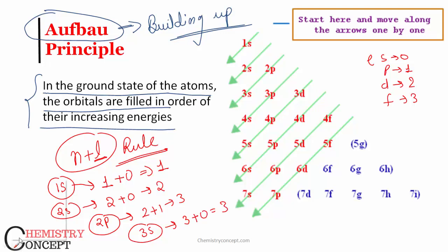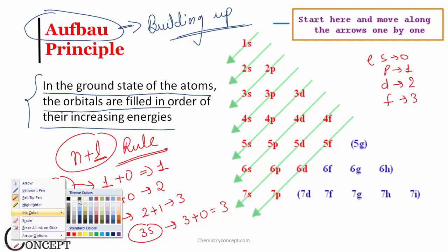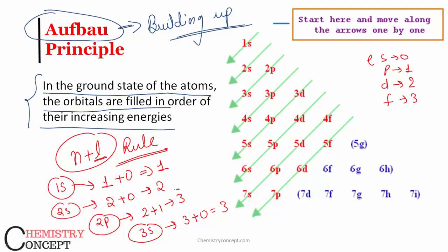Now there is a problem. What do we do in that case where n plus l value is the same? The sequence of the orbitals is decided using n plus l rule. But if two different orbitals have the same value of n plus l, then we focus on the value of n alone.